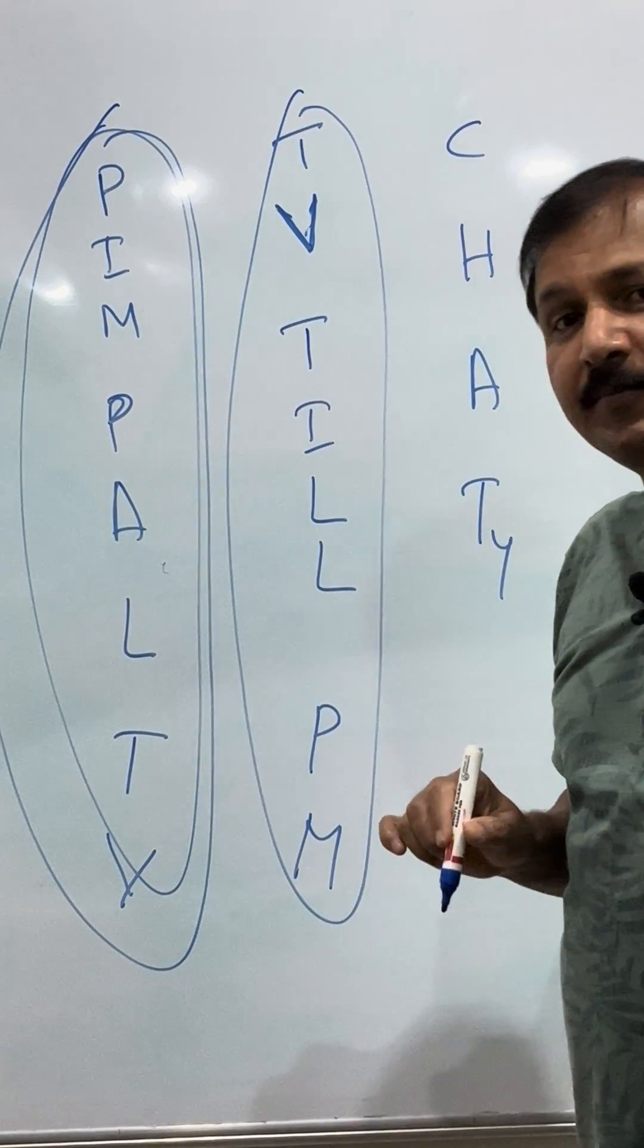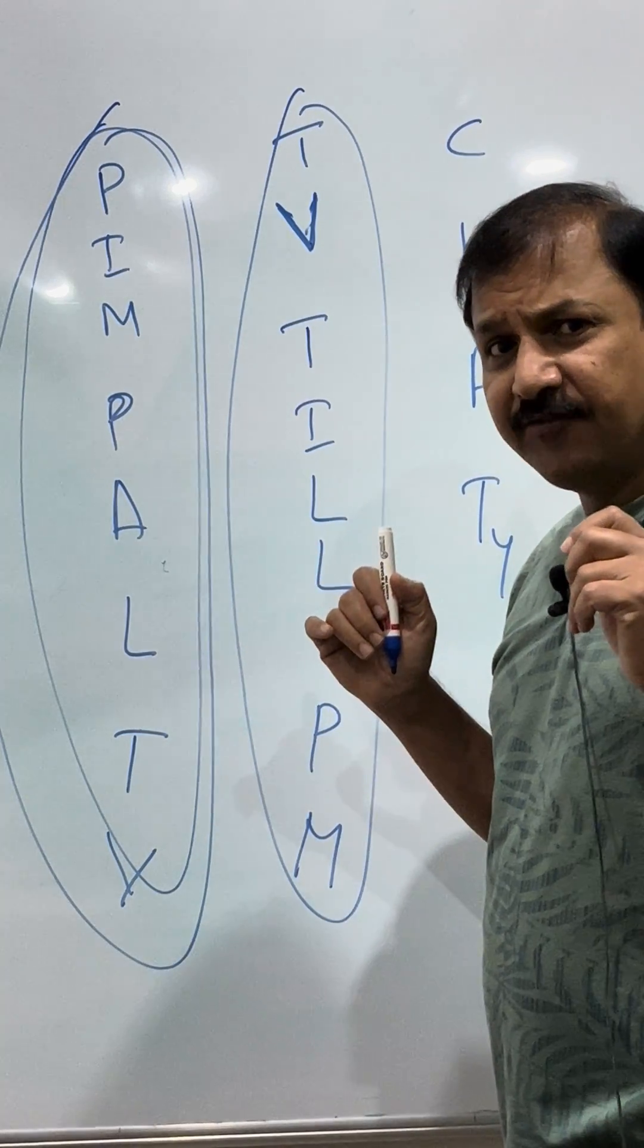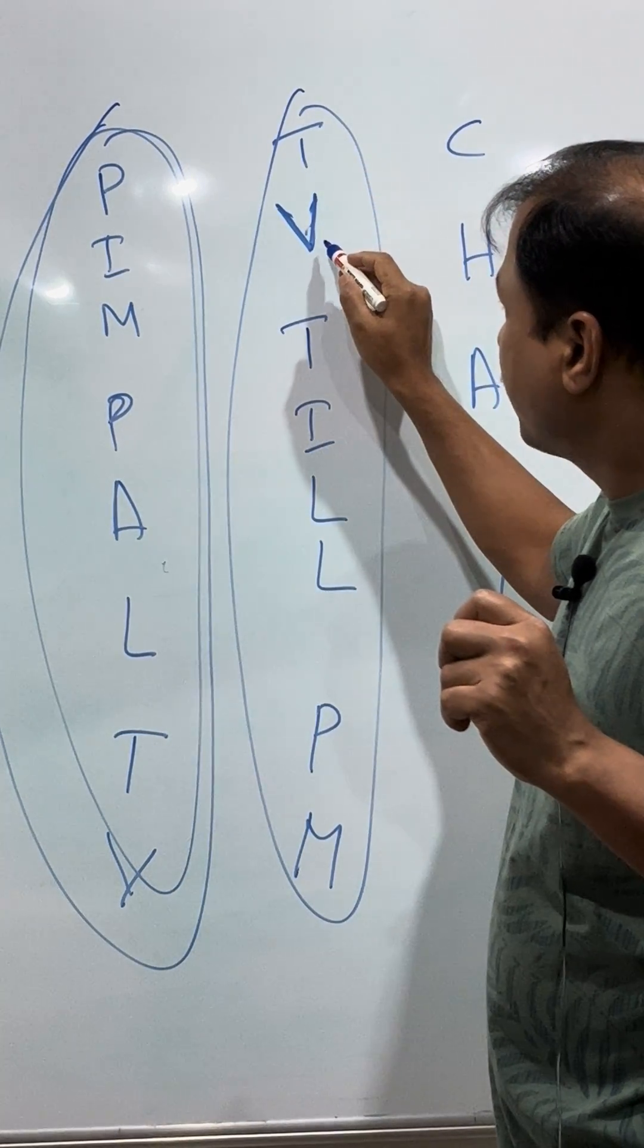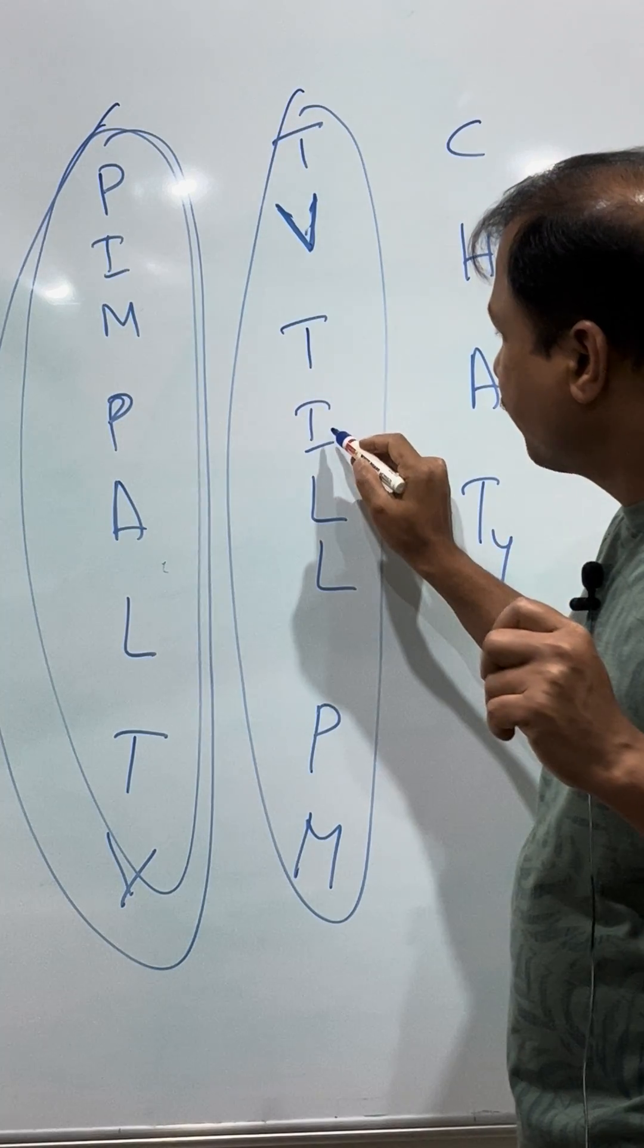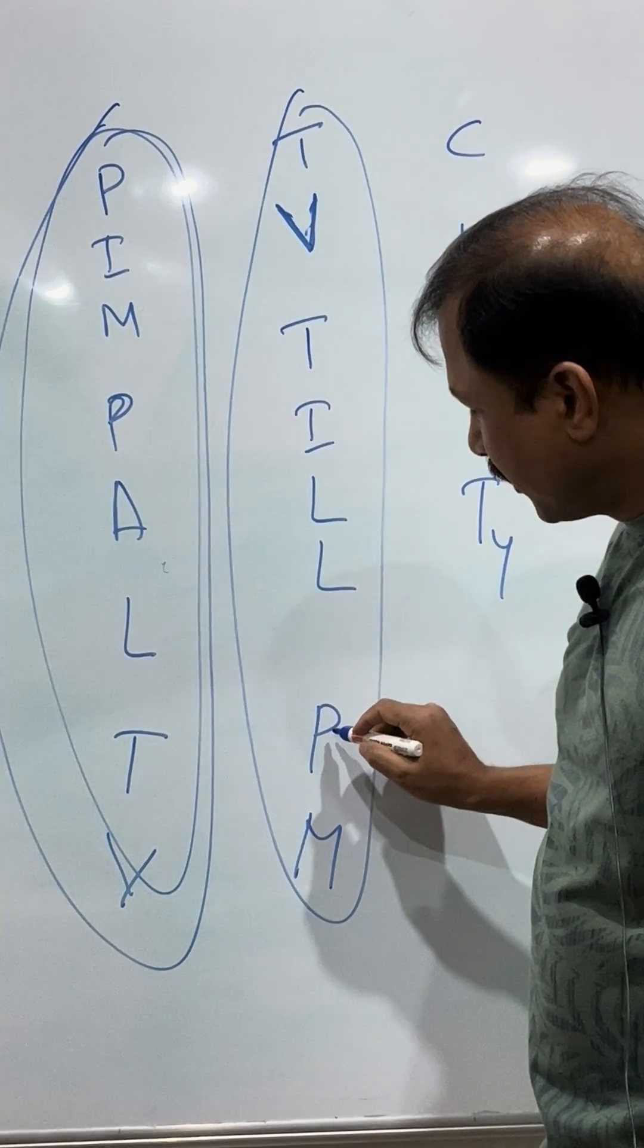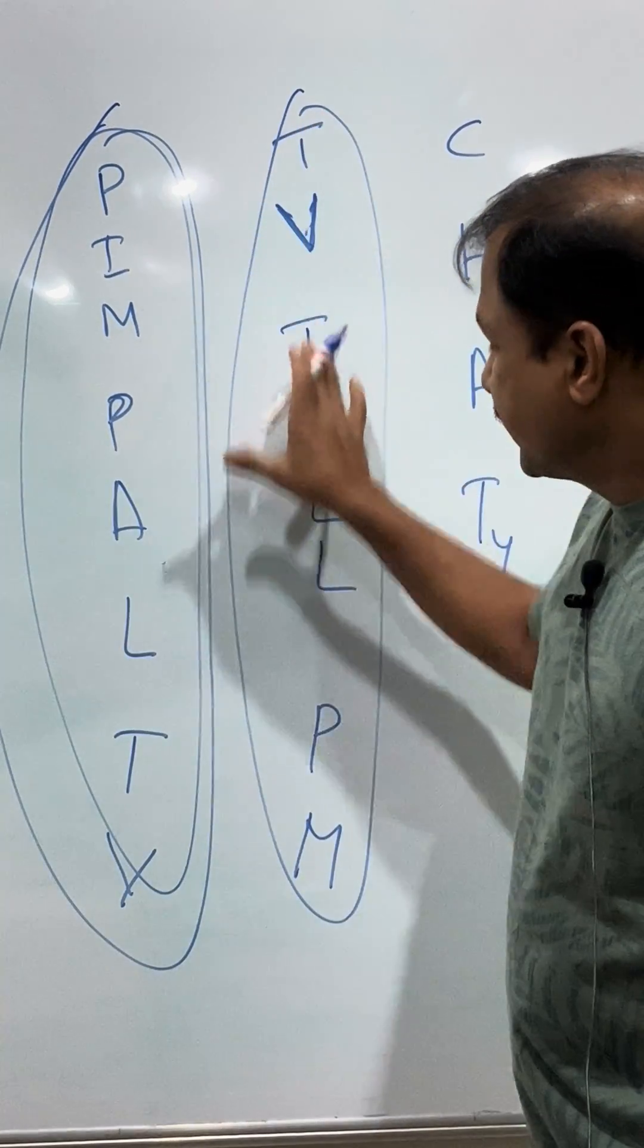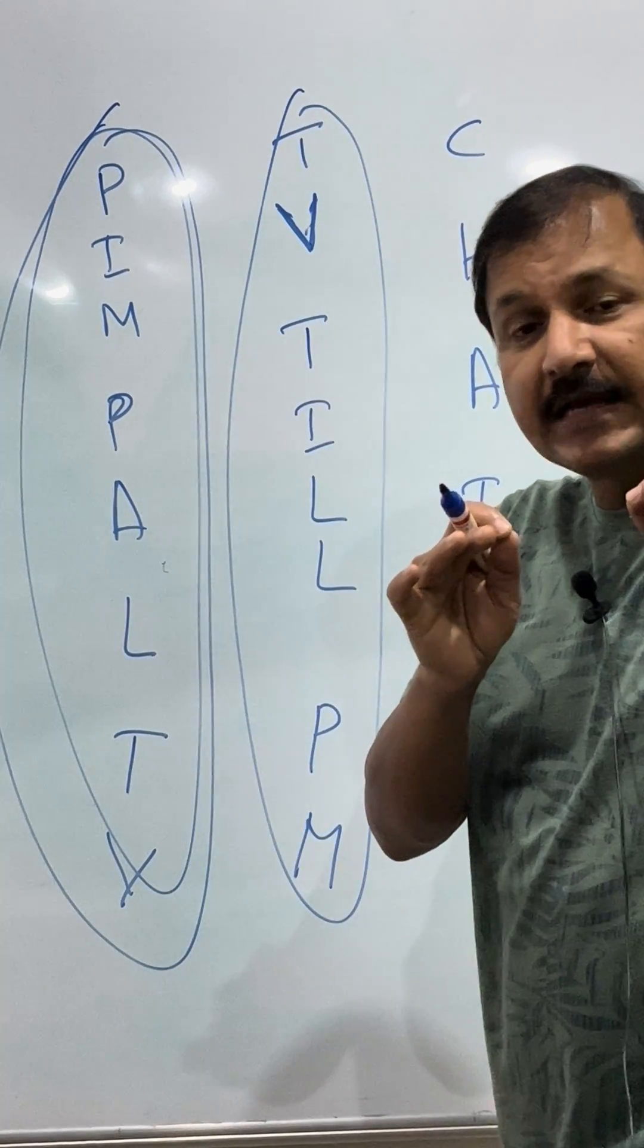Essential amino acids you can remember as TV TILL PM. What is TV TILL PM? T for threonine, V for valine, T for tryptophan, I for isoleucine, L for leucine, another L for lysine, P for phenylalanine, and M for methionine. That is TV TILL PM for essential amino acids.